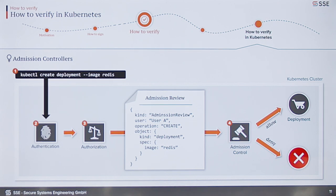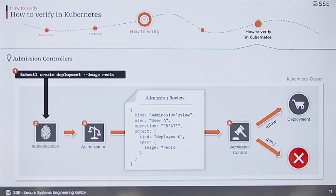Based on this information, all your admission controllers can make certain decisions and then either deny the whole request or allow it. There are two kinds: validating and mutating admission controllers. The validating admission controllers just make the decision — yes, I want this resource to be deployed, or no, I don't want this. And the mutating ones, additionally to denying or allowing, can also mutate the whole resource being deployed. So a mutating admission controller can, for example, just change the Redis image to MongoDB if set up to do so.